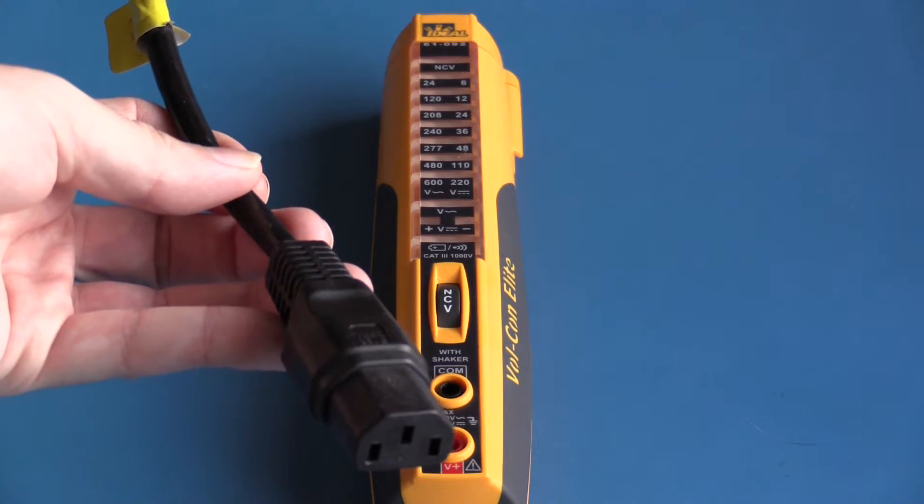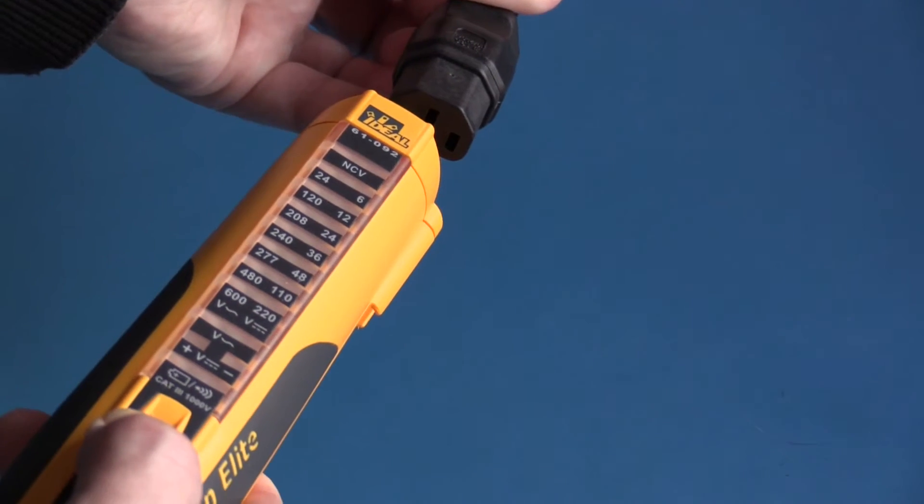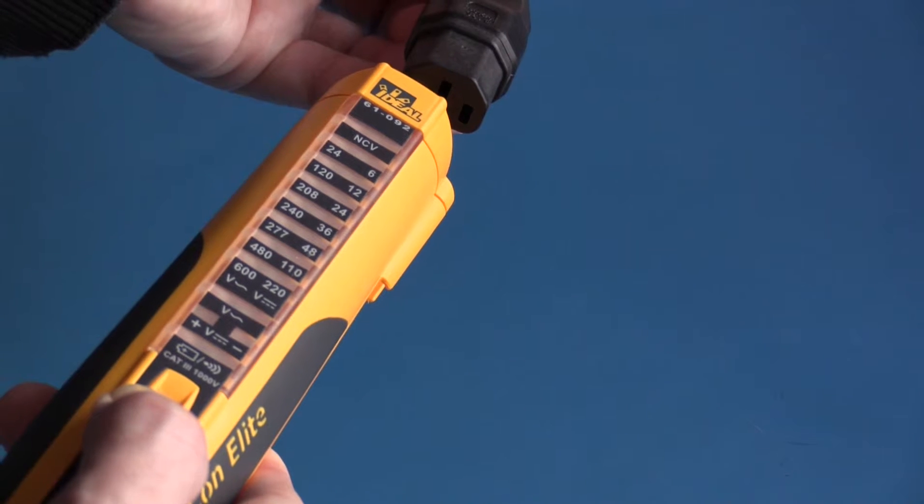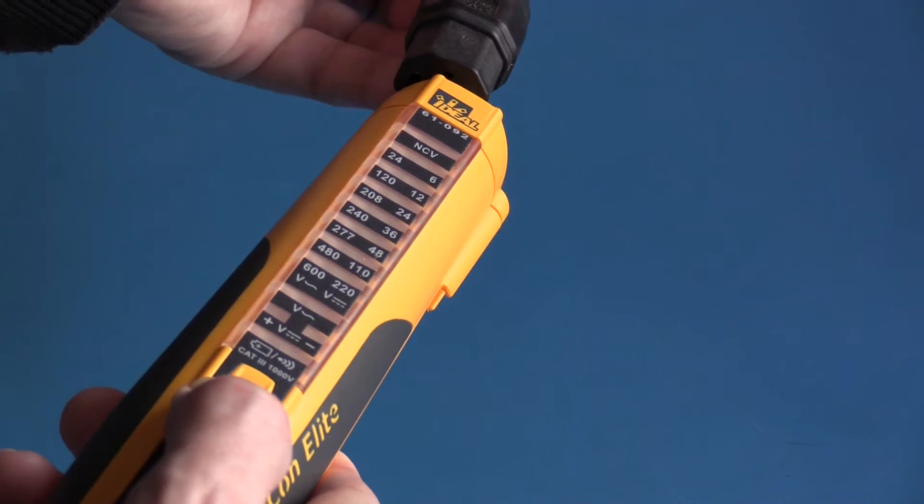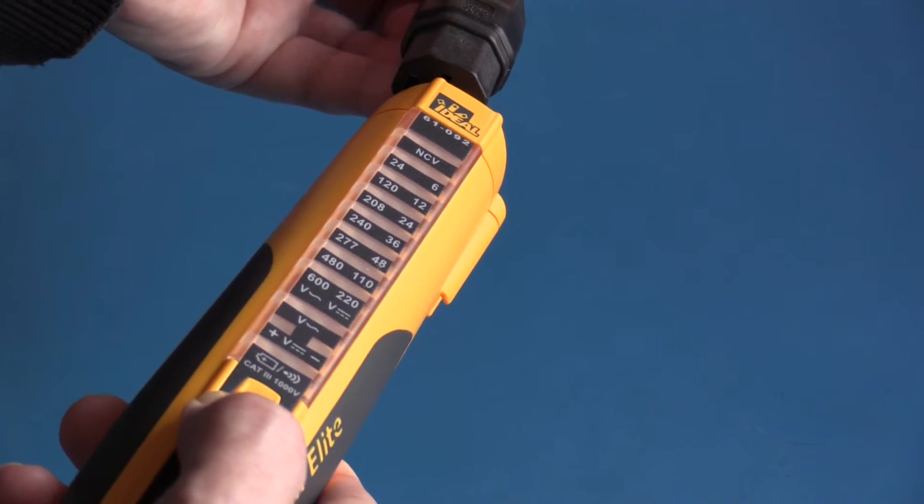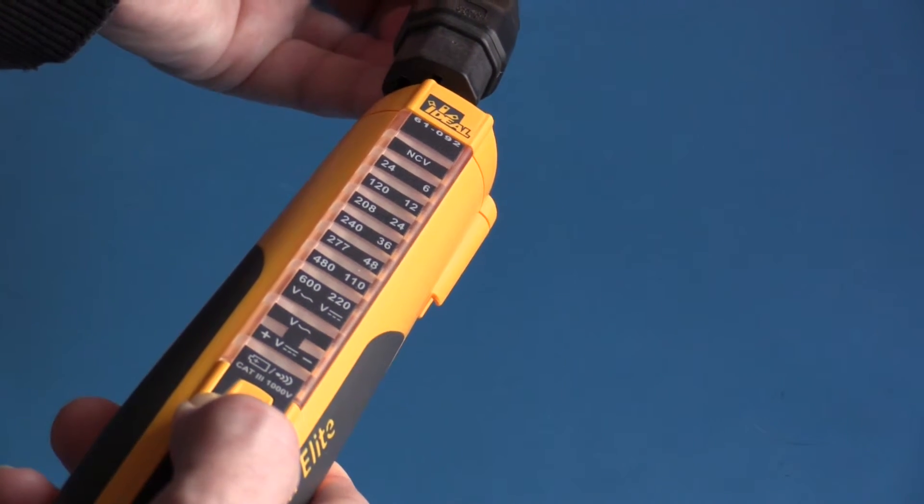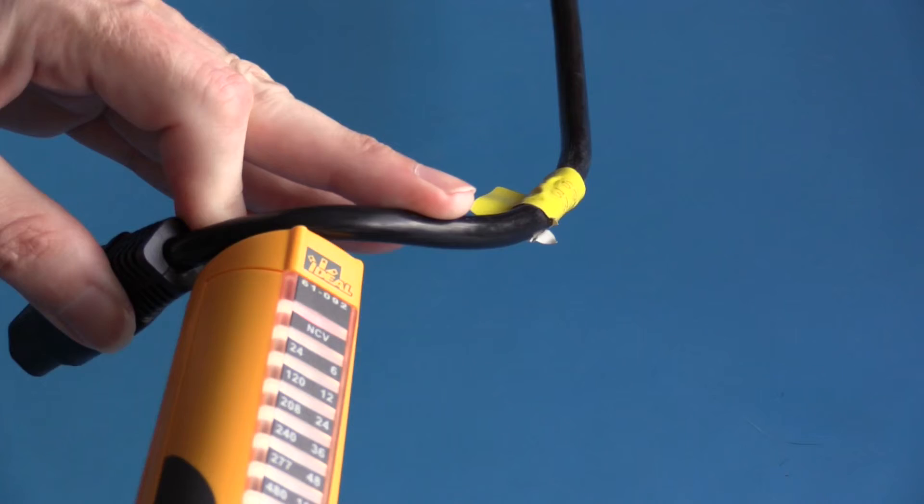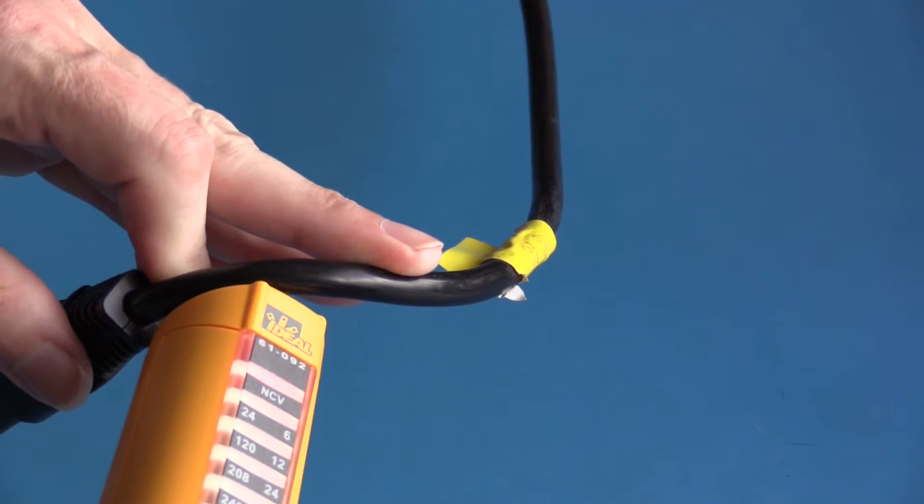This is a more substantial 10 amp rated cord neutral. We're getting no indication. Now let's check live. And we're also not getting indication of any voltage present. There's no indication that this cable is live when tested in this manner. But we can clearly see that this cable is actually live.